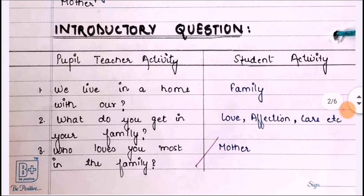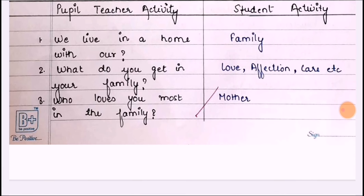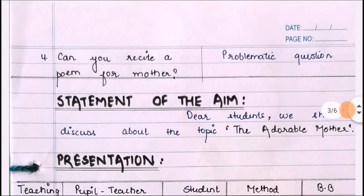After that, introductory questions will be divided into two columns: pupil-teacher activities and students' activities. The questions should be based on previous knowledge and should be easy, connected with each other. The first statement is the statement of the aim: 'Dear students, today we shall discuss the topic, The Adorable Mother.'